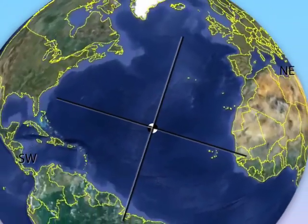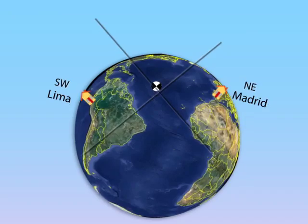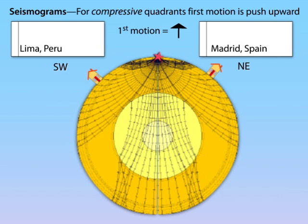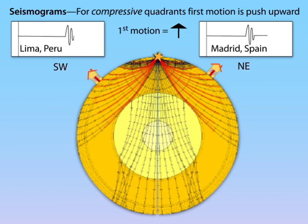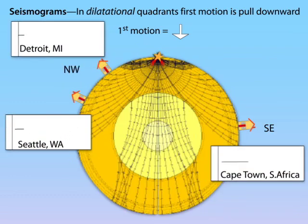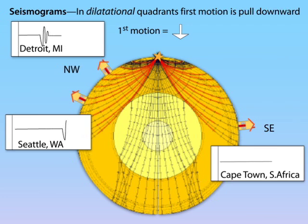First, make a vertical cut into the earth through the hypocenter in a northeast-southwest orientation. P waves leaving the earthquake and traveling to Lima, Peru in the southwest quadrant, or to Madrid, Spain in the northeast quadrant, will have compressional first arriving P waves that push up, away from the earthquake, and are observed as an initial upward vertical motion on the seismograms. The second cross section shows P waves traveling to Detroit and Seattle in the northwest quadrant and to Cape Town, South Africa in the southeast quadrant. These will have dilatational first arriving P waves that are pulled toward the earthquake, observed as a downward vertical motion on their seismograms.